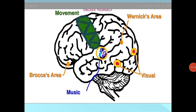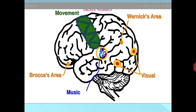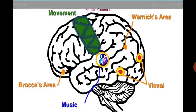Broca's and Wernicke's areas are mainly concerned with language functions. Broca's area, located in the frontal lobe of the left hemisphere, is associated with speech production and grammar usage. Wernicke's area, located in the temporal lobe of the left hemisphere, helps in understanding or comprehending language. The occipital lobe is associated with visual processing, the temporal lobe with auditory processing, and movement is mainly controlled by the frontal lobe.